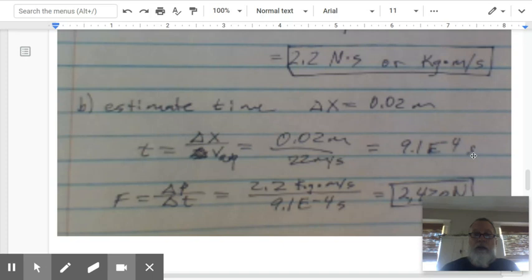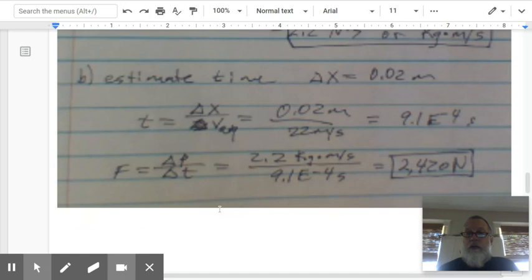Then to find the force of impact, we take change in momentum divided by time, and we end up with 2,420 newtons.